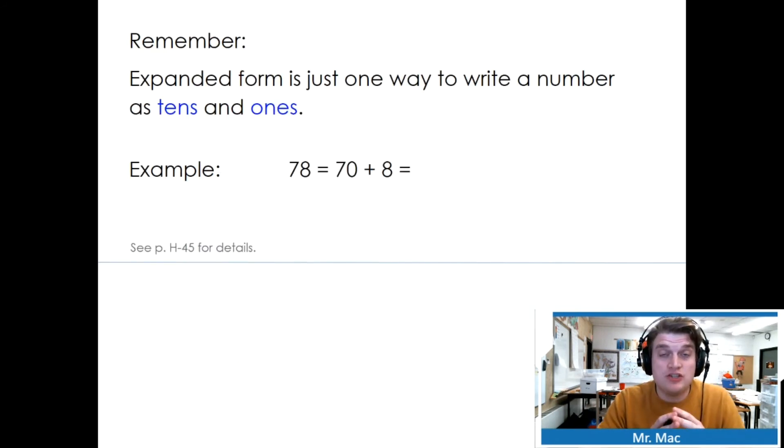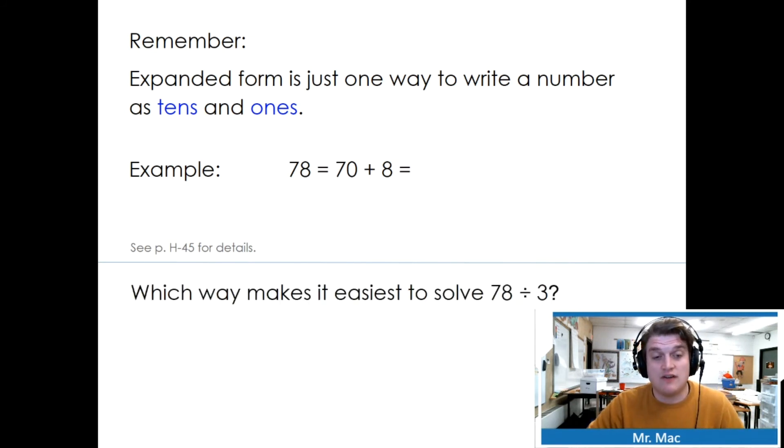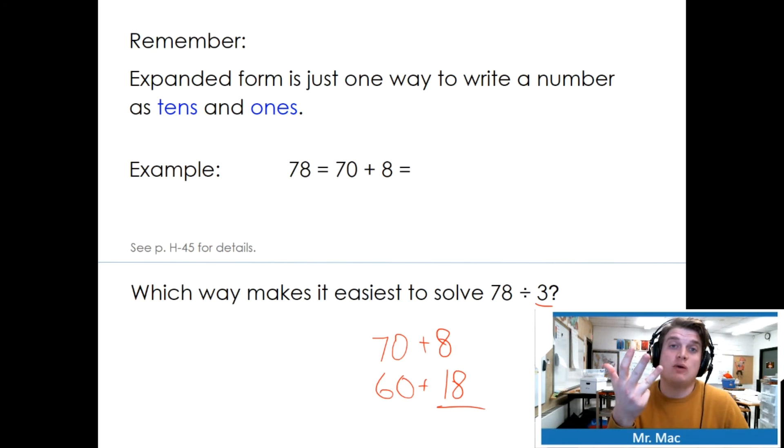Remember, expanded form is just one way to write a number as tens and ones. 78 equals 70 plus 8. We have our tens, we have our ones. Which way makes it easiest to solve 78 divided by 3? If we wrote 70 plus 8, we know that 70 can't be shared equally with 3, and 8 can't be shared. We could try 60. We know that 60 can be shared with 3, which leaves us 18. Can 18 be shared with 3? Let's skip count by 3's: 3, 6, 9, 12, 15, 18. It can. So 18 divided by 3, we just found, is 6. And 60 divided by 3 is 20. Our quotient is going to be 20 plus 6.